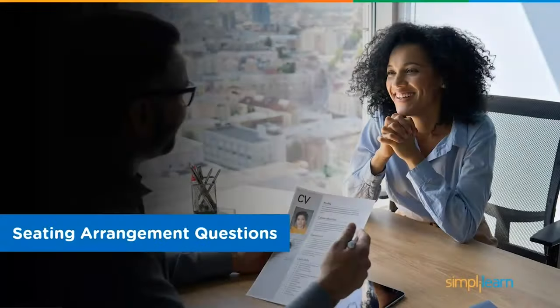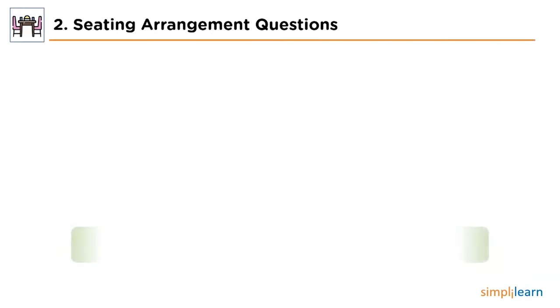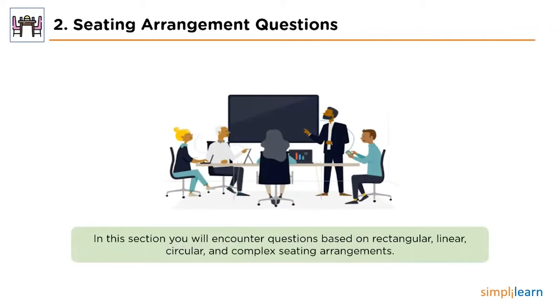Next we have sitting arrangement. These questions involve arranging persons or objects according to the conditions given in a question. We'll have to understand the seating sequence, direction, and whether the person is facing inwards or outwards, in order to conclude the answer. These sorts of questions include straight line seating arrangement and complex arrangements such as circular, rectangular and triangular.